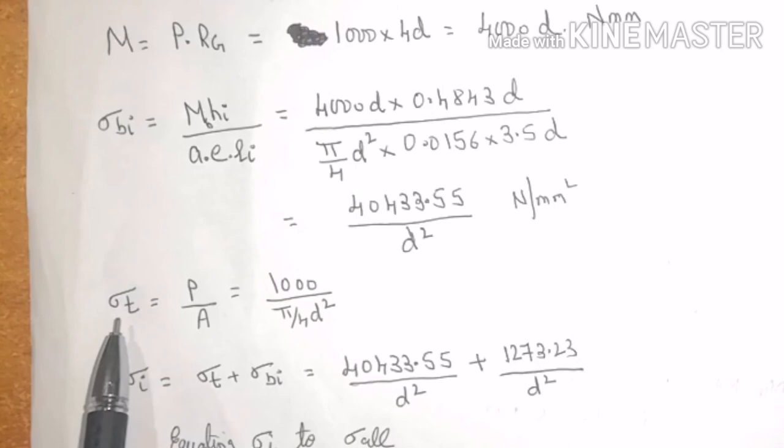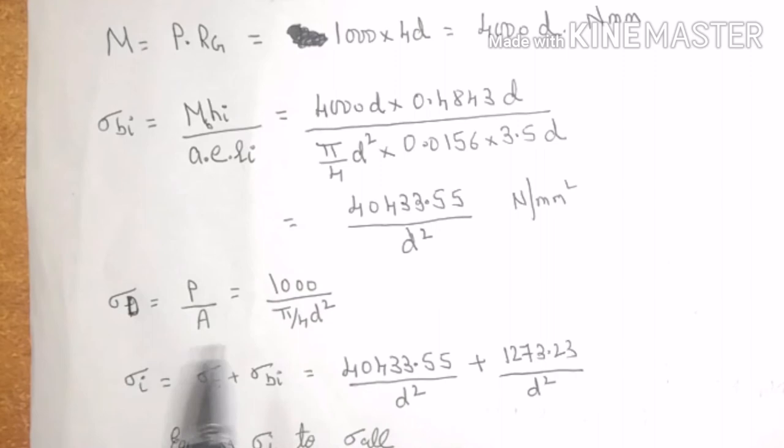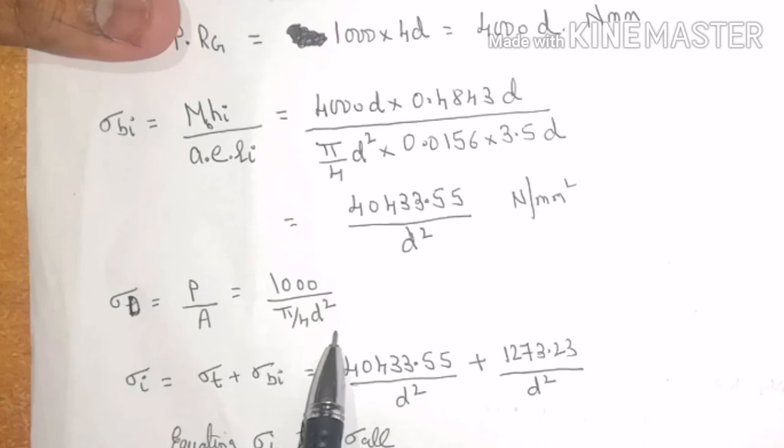Now we need to find out what is the direct stress. Direct stress is sigma D equals P by A, so 1000 divided by pi by 4 D square.